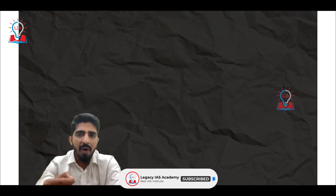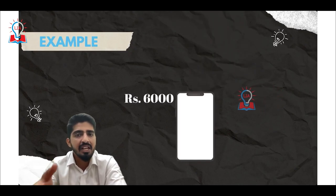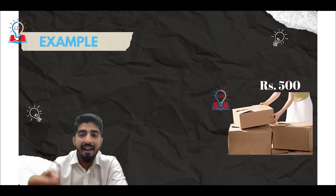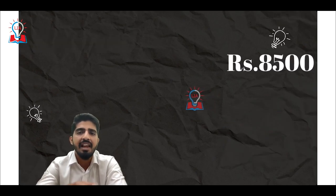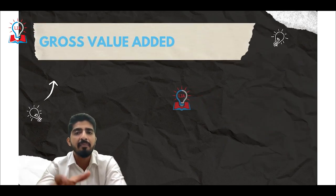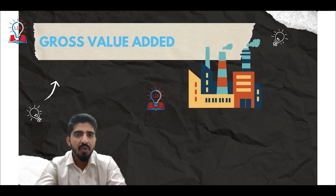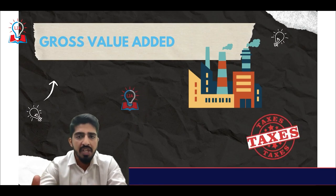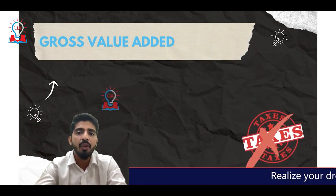Taking the same mobile example, we break it down into pieces: the IC chip is 2,000 rupees, the phone screen is 6,000 rupees, and the transportation costs and packaging charges are 500 rupees — making the total cost 8,500 rupees. This is from the manufacturer's side, and is known as Gross Value Added, because at different stages value was added. This does not include taxes on the final product.